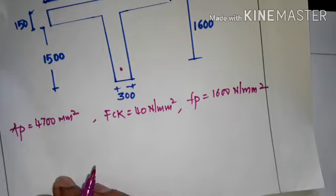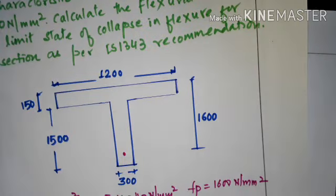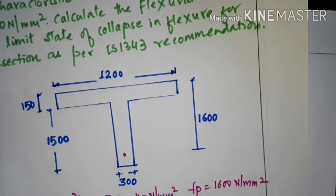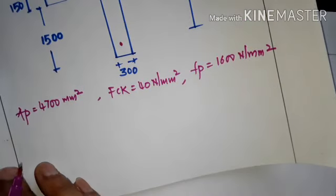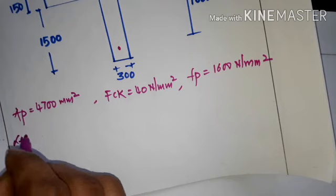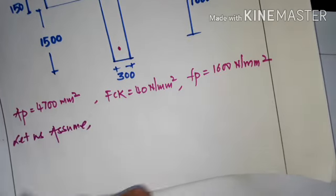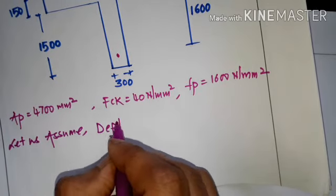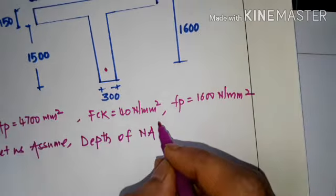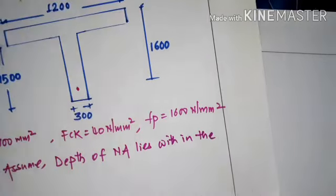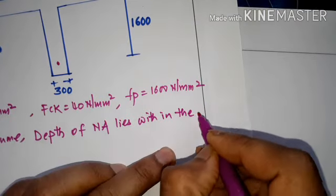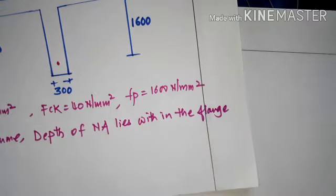Since this is a flanged section, we must check whether the neutral axis lies within the flange or outside it. We first assume the neutral axis lies within the flange, meaning XU < DF.